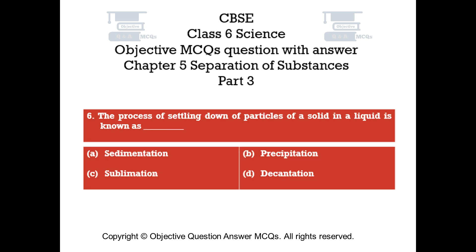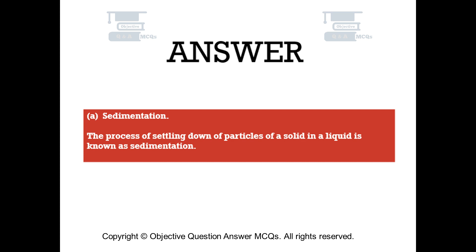Question number 6. The process of settling down of particles of a solid in a liquid is known as. Option A: Sedimentation. Option B: Precipitation. Option C: Sublimation. Option D: Decantation. The right answer is Option A — Sedimentation. The process of settling down of particles of a solid in a liquid is known as sedimentation.